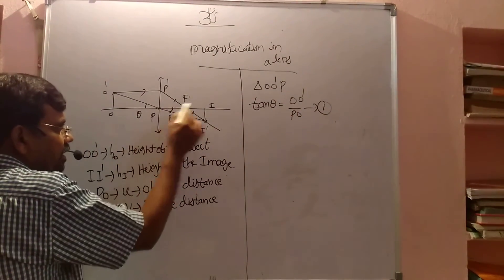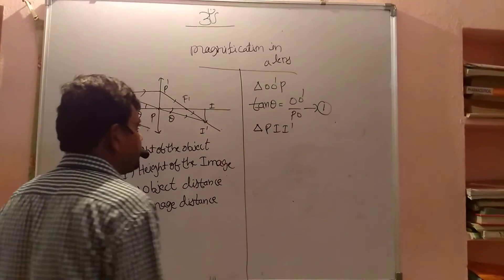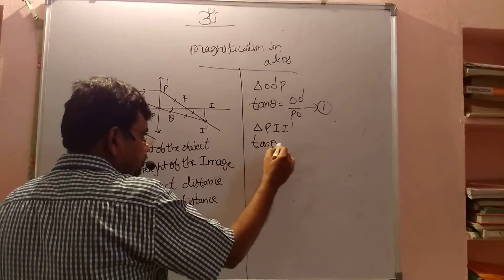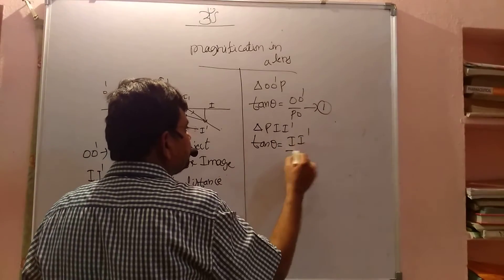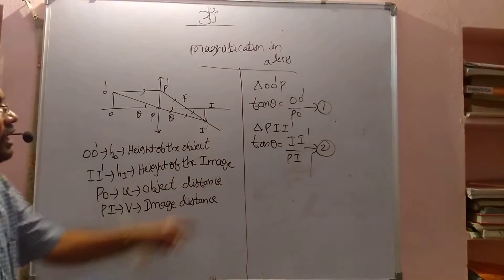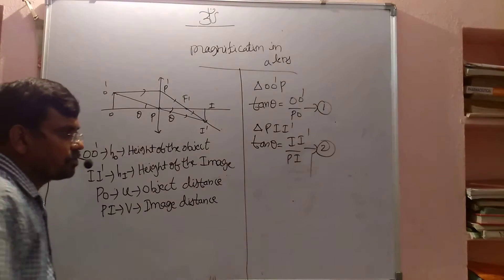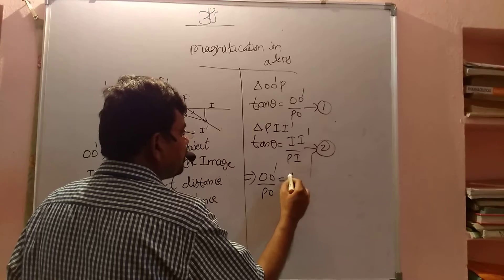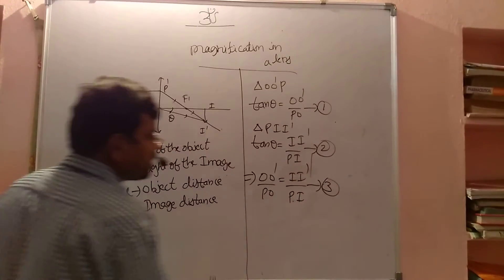Similarly, I am taking triangle PII'. In that triangle, tan theta equals I' divided by PI. This is my second equation. Since the left-hand sides are equal, the right-hand sides are also equal, giving us equation 3: O' divided by PO equals I' divided by PI.